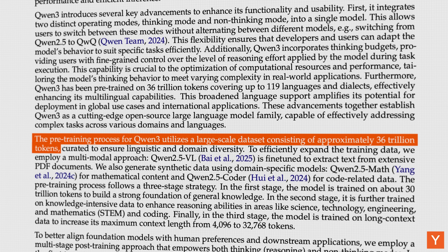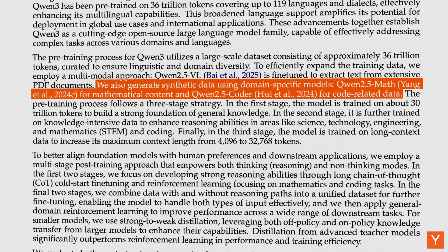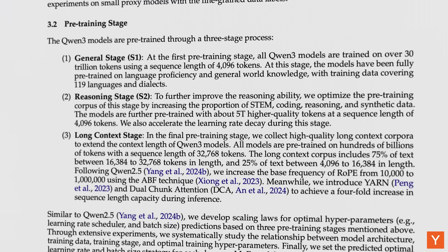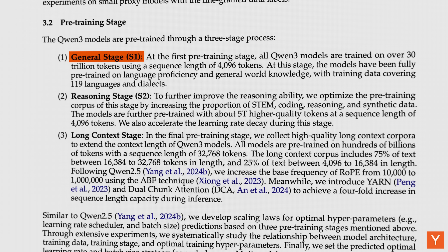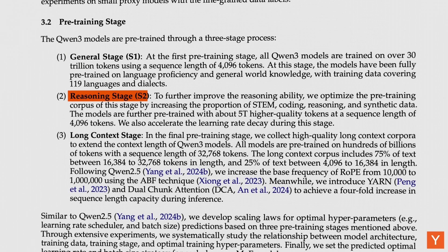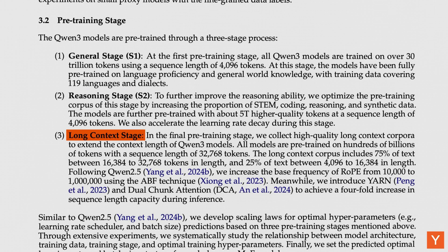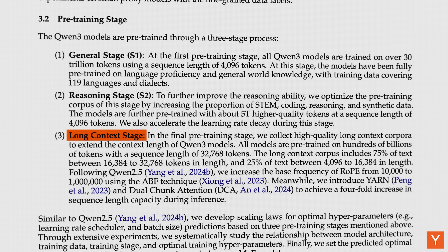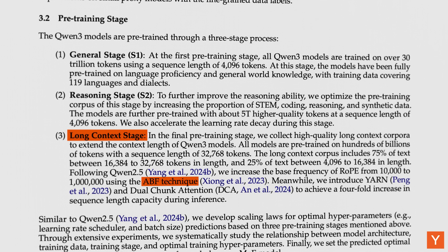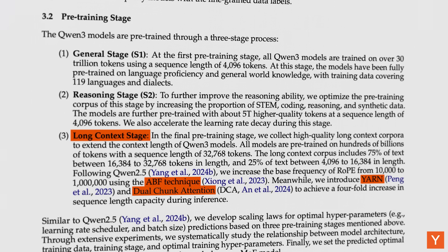In addition to pulling data from multilingual text, STEM, coding sources, and reasoning tasks, Qwen3 also uses Qwen2.5 models to generate trillions of tokens of synthetic data in formats like textbooks, instructions, and code snippets. Qwen3's pre-training occurred in three stages: Stage 1 (the general stage) trained models on over 30 trillion tokens covering 119 languages at a sequence length of 4,096 tokens; Stage 2 (the reasoning stage) added 5 trillion higher-quality tokens featuring more STEM, reasoning, and coding problems; and Stage 3 (the long context stage) extended context length to over 32,000 tokens using ABF, YARN, and dual chunk attention to process sequences efficiently — together allowing the model to reason over much longer inputs at inference.